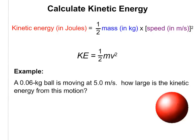Let's look in more detail at kinetic energy. It's the energy of motion, and it depends on two factors: the object's mass and the object's velocity. There's a lot more energy if an object is going at a greater velocity or has a greater mass. In particular, velocity is very impactful because it is squared, so it has even more of an effect than mass.